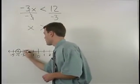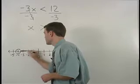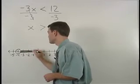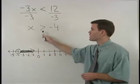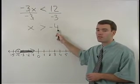Next, we draw an arrow going to the right on our number line to represent all numbers greater than negative 4.